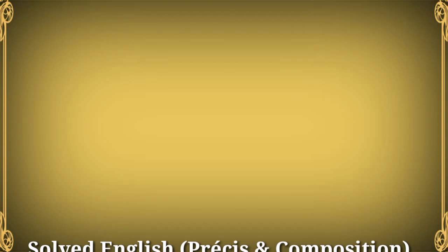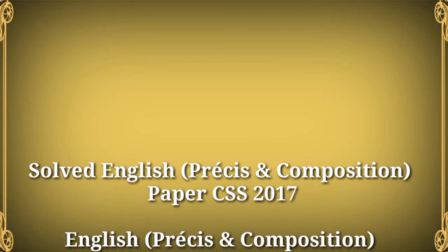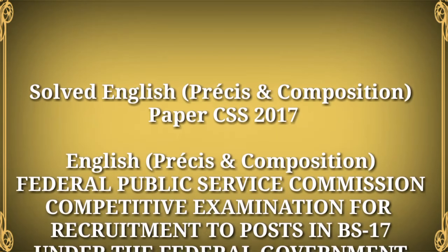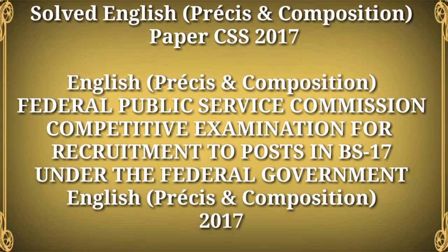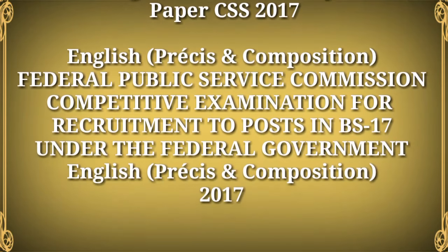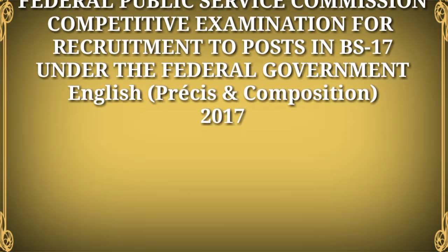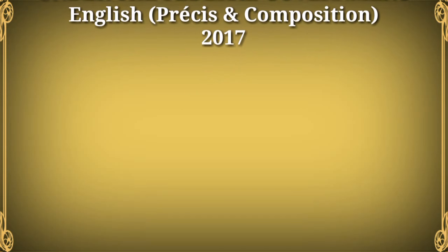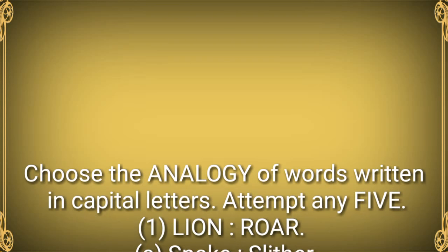Solved English Précis and Composition paper, CSS 2017. Federal Public Service Commission competitive examination for recruitment to posts in BS-17 under the Federal Government. English Précis and Composition 2017. Choose the analogy of words written in capital letters. Attempt any five.